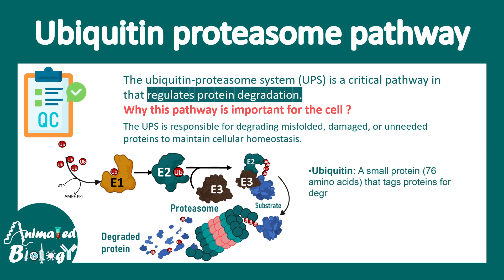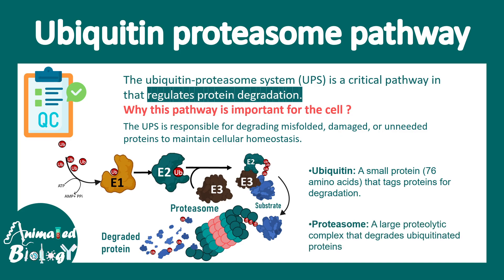There are two main components to it. One is ubiquitin, which is a small protein 76 amino acids long that tags the protein for degradation — it's kind of like a degradation tag. Then there is the proteasome, which is a large proteolytic complex that degrades the ubiquitinated proteins which were previously marked for degradation.